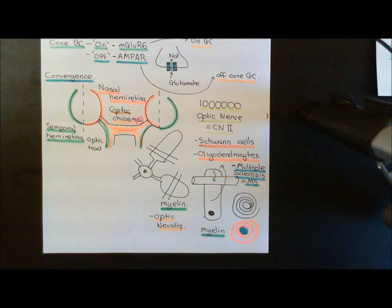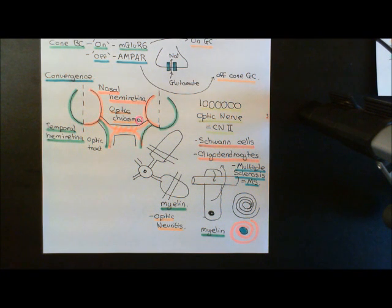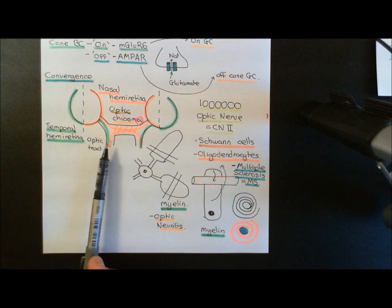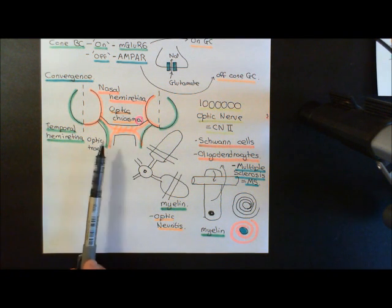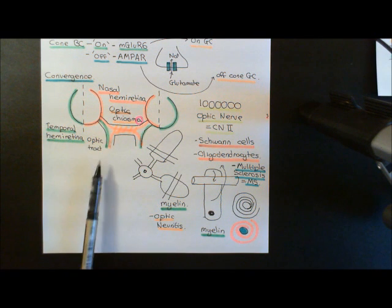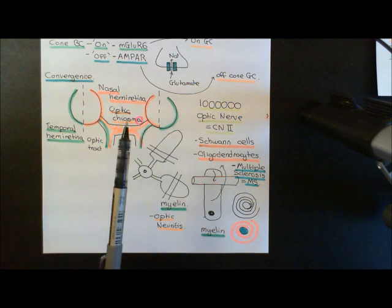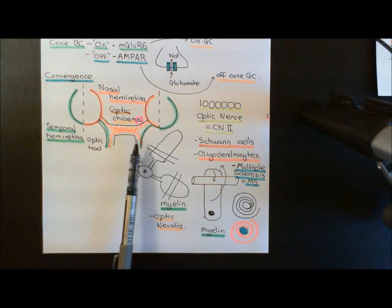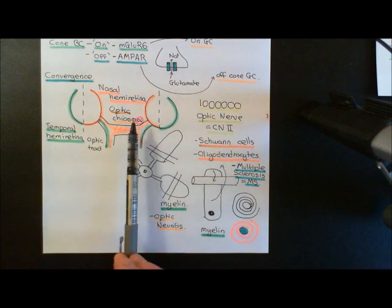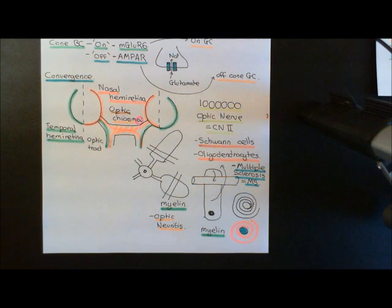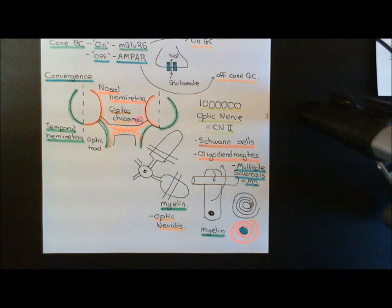The optic chiasm is about crossing over information so that we're accumulating all the information from certain hemifields together. All the information about the right visual hemifield is now on the left side, coming up in the left optic tract. All the information about the left visual hemifield is now on the right side, in the right optic tract. The next part of the story is to see where this information is actually going to go — we need to follow the optic tract backwards.